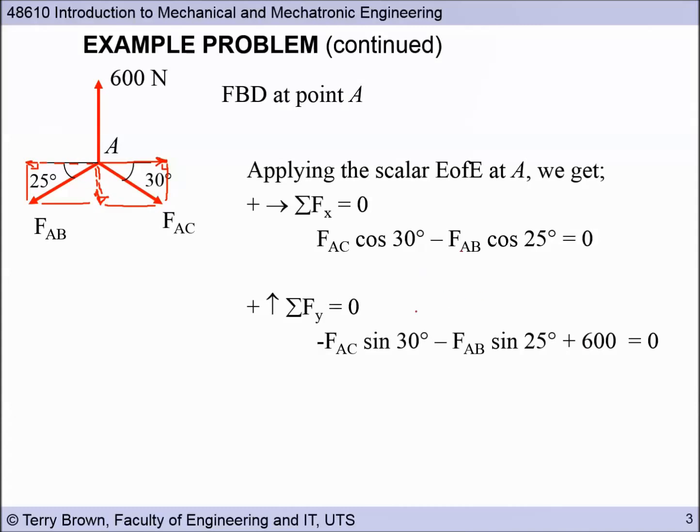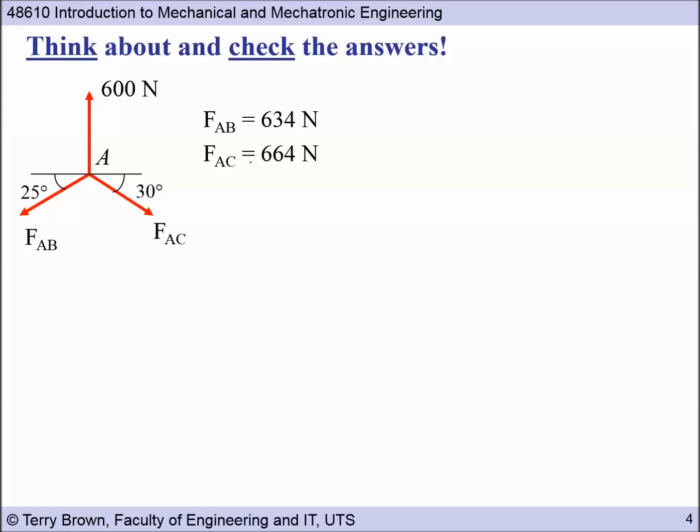Okay, so now we've got two equations, two unknowns, so FAC here in the first equation, FAB in the second equation. So simultaneous equations, I'm not going to go through solving that, you should know that from maths. So you can do that for yourself and then check that you get the same answers that I've got here for force FAB and FAC. Okay, so having done that, we should think about and check our answers. So let's have a think. So what have we got here? FAB is 634, FAC is 664. So are they around about right?